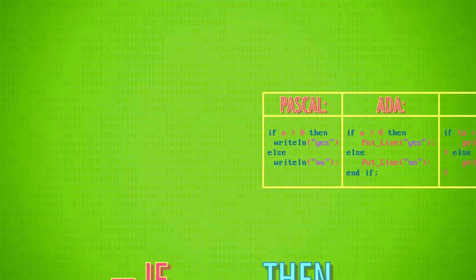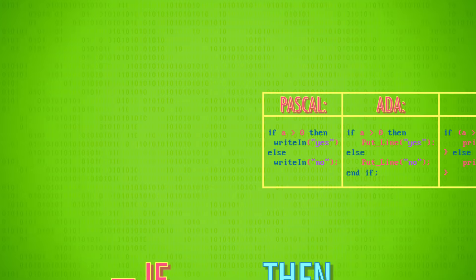Here are some examples of if-then-else statements from some popular programming languages. You can see the syntax varies a little, but the underlying structure is roughly the same. If statements are executed once — a conditional path is chosen and the program moves on.